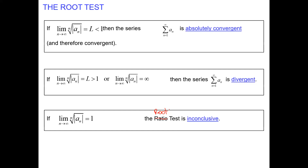Note: if we get divergence, it's just divergent — there's no room for conditional convergence. If it's absolutely convergent, then it's absolutely convergent. These are the only two outcomes besides inconclusive.